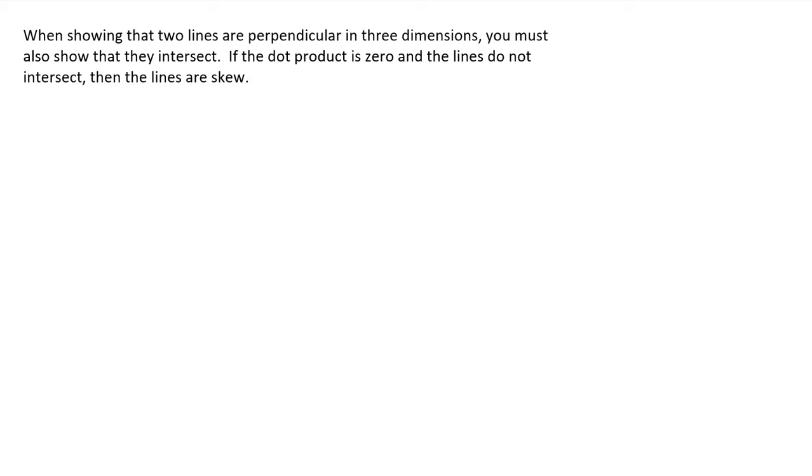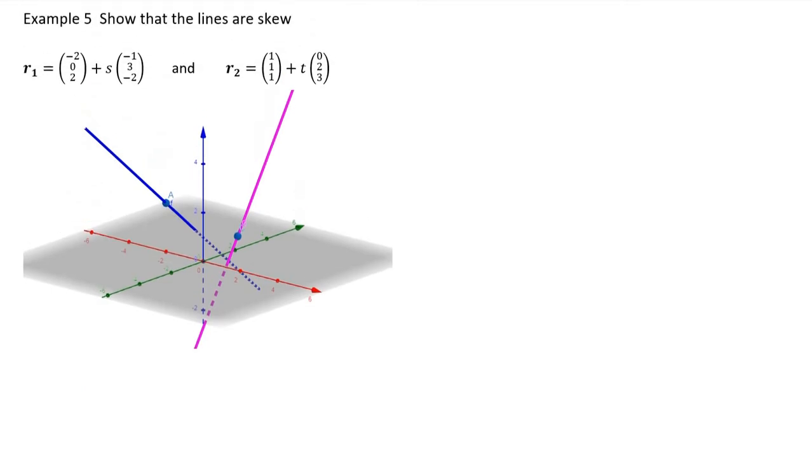However, it also has implications when we're finding perpendicular vectors in 3D space, because you can still have scenarios where the dot product is zero, but the lines do not intersect. We do not consider those lines to be perpendicular, we consider them to be skew. Perpendicular lines have a point of intersection at the right angle.